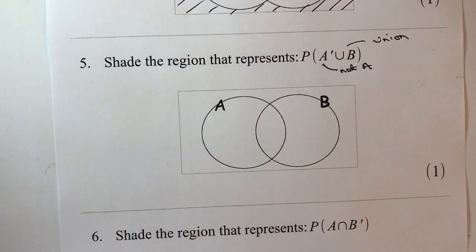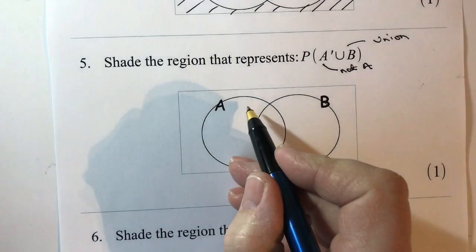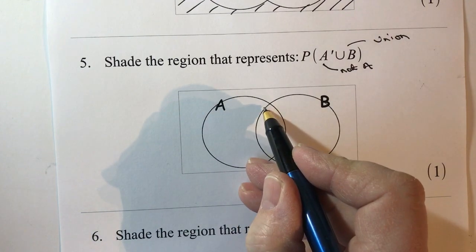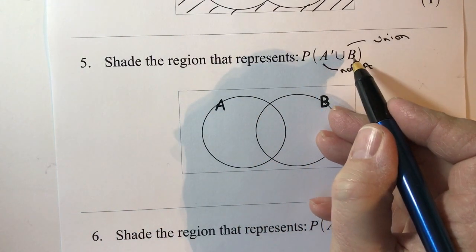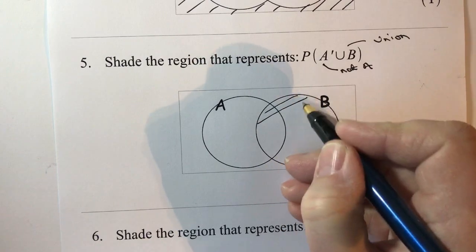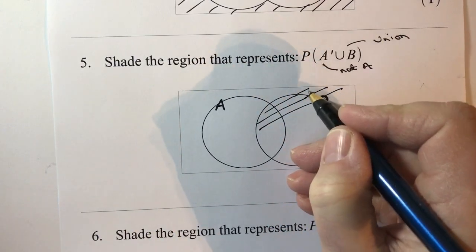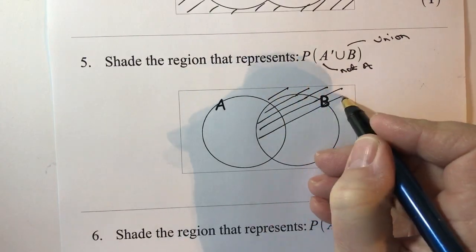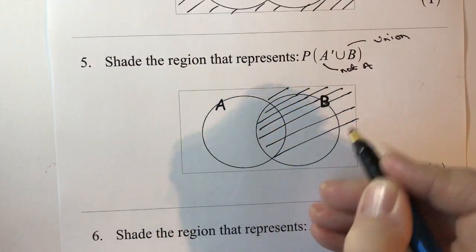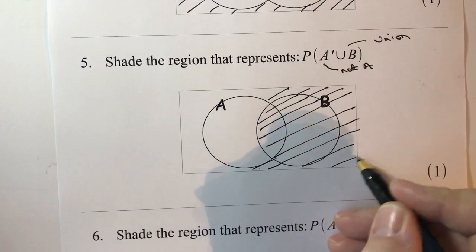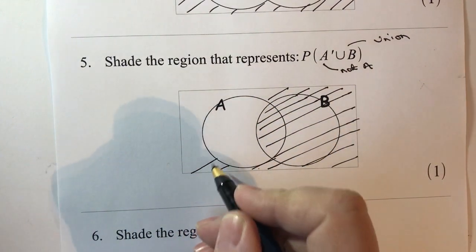Okay, well those are all the people that are represented in the not A category, so that's all of these people here. But we're going to allow the union with B and everyone else as well. So we can actually shade everything apart from the people that are within the A group.